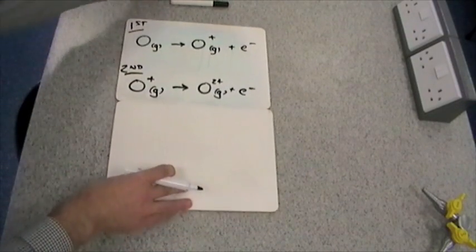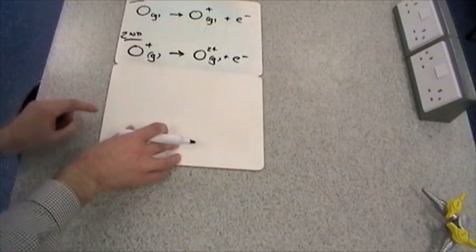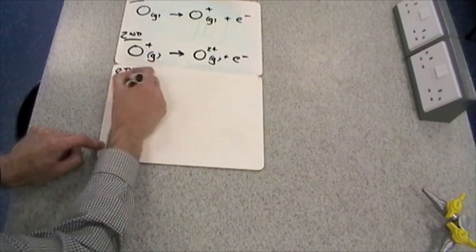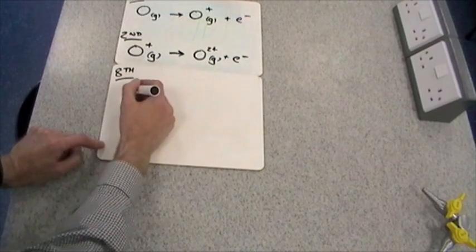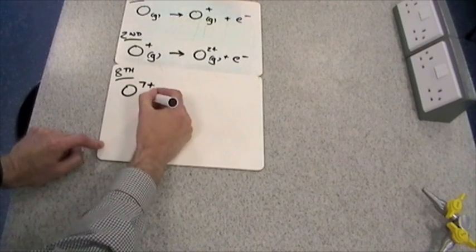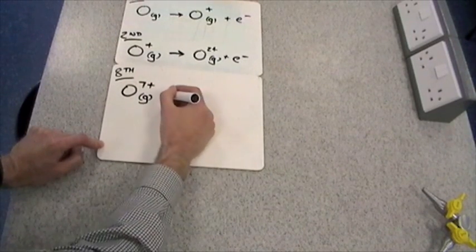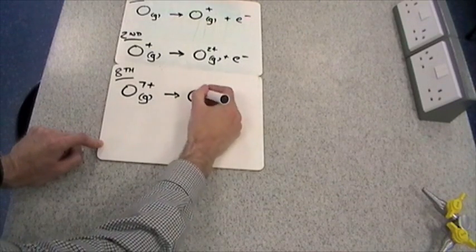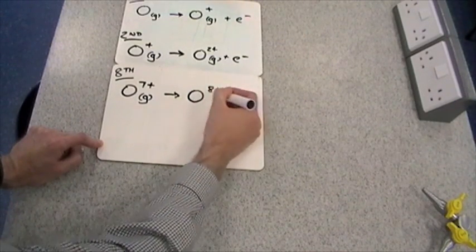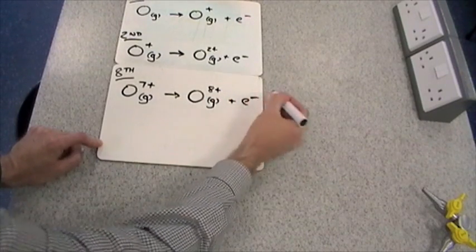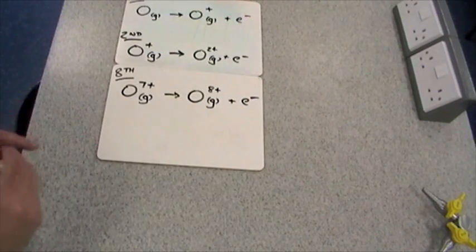So I suppose the last one we should do, we'll do the eighth. So we're starting with the O7 plus gas. So we're going to remove that final electron, so it'll become O8 plus gas. And there's that final electron, well and truly gone.